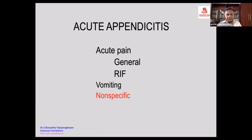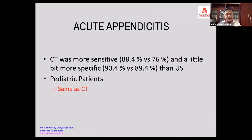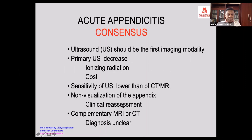CT and MRI offer more specificity than ultrasound, though concerns around radiation with CT and safety with MRI are noted. It is agreed, however, that ultrasound fails to visualize about 10% of appendices, in which case clinical reassessment and complementary MRI or CT should be suggested.